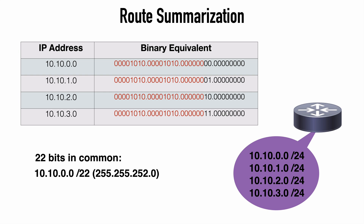We have the first 16 bits plus an additional 6 bits for a total of 22, meaning that we can represent this entire list of networks with the address 10.10.0.0/22, or in other words, that subnet mask would be 255.255.252.0. So with this in mind, let's jump into a lab and see how we can use this.